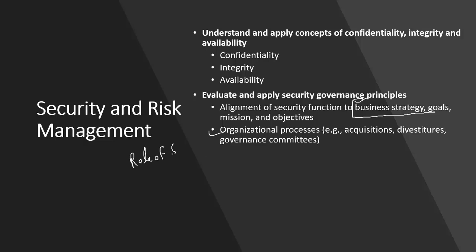The next part is organizational processes — we need to understand the role of security governance in organizational processes. For example, when a company plans to acquire another organization, the security officer will assess new risks, new threats, and new compliance issues. If an organization is divested into two or three parts, the role of security governance is to ensure data is not disclosed to unauthorized users, and to build governance committees and manage budgets.